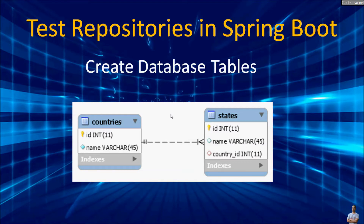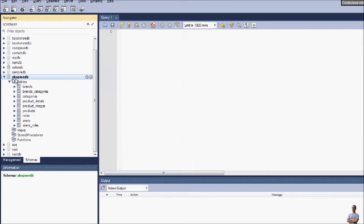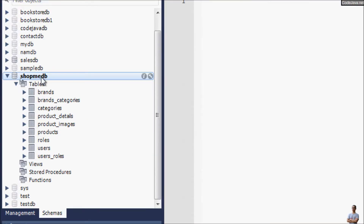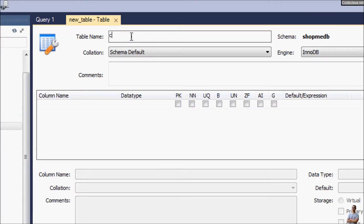Now let's create two new tables in the database. We are going to create a 'countries' table and a 'states' table. The relationship between them is one-to-many: a country can contain one or more states, and a state belongs to only one country. I'm opening MySQL Workbench connected to the project database 'softmiddb' and will create a new table.